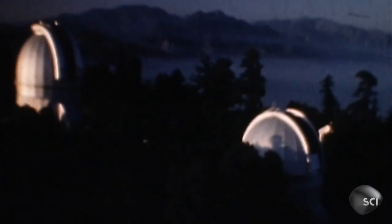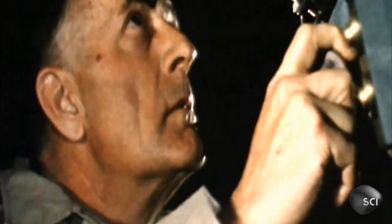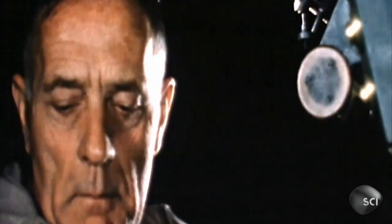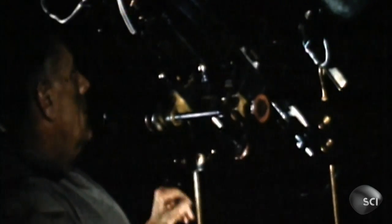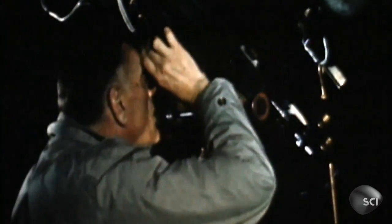In 1929, that all changed. At the Mount Wilson Observatory above Los Angeles, astronomer Edwin Hubble discovered galaxies aren't stuck in one place. Not only are they moving, but they're flying away from Earth at incredible speeds.